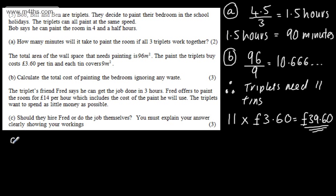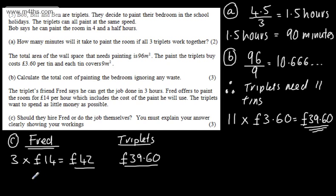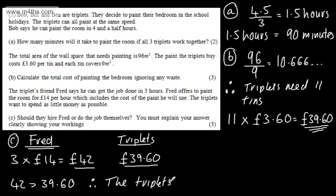So in part C, for Fred, we can see that three times £14 is equal to £42. If the triplets do it themselves, we have a total of £39.60. This value is cheaper. We can say £42 is greater than £39.60. Therefore, the triplets should do the job themselves.